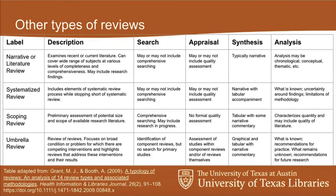Now I want to talk about what other types of reviews there are. Systematic reviews are the most known and most talked about, but sometimes in specific disciplines we might be using systematic review terminology when what we're actually thinking about is something a little bit different. If you read through the Grant and Booth article sent in advance, it goes through 14 different types of reviews in much more depth. This chart I've put together is adapted from the chart in that work.